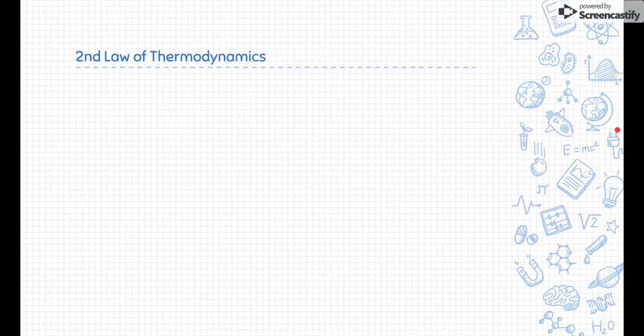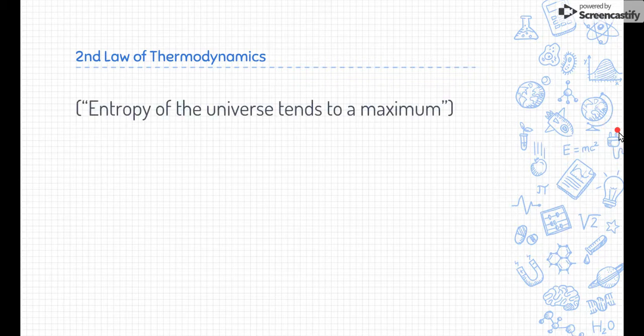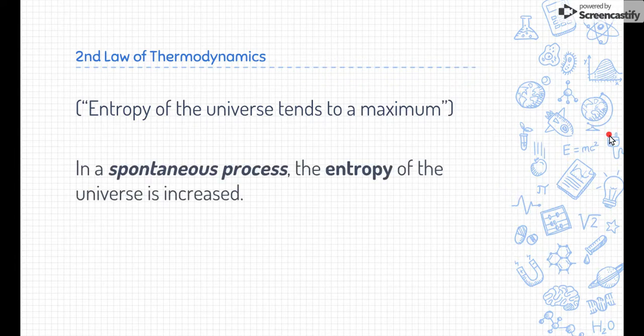To start talking about entropy, we need to talk about the second law of thermodynamics. The second law of thermodynamics says that the entropy of the universe tends to a maximum. It's a very simple sentence, so I'm going to complicate a little bit more by giving you a little bit longer of a sentence. It's saying the same thing, but I like the second sentence a little bit better.